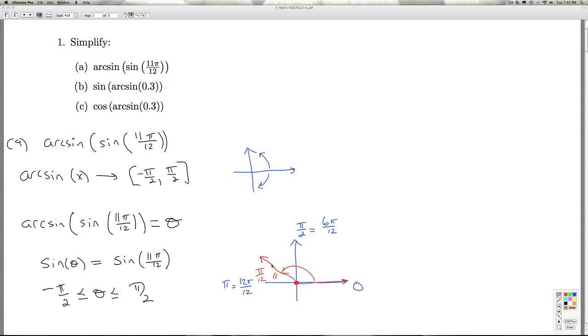Well, the sine of 11π over 12 is the y coordinate on the terminal side of the angle where it intersects the unit circle. So, if I'm going to have the same y coordinate, that means that the theta is going to have to be over here. So, this is my theta, and he's going to be in quadrant 1.